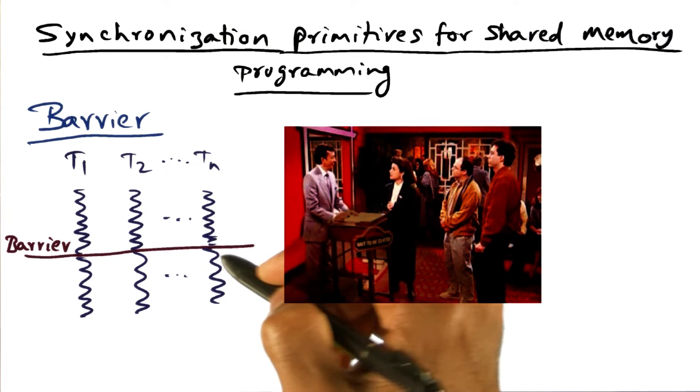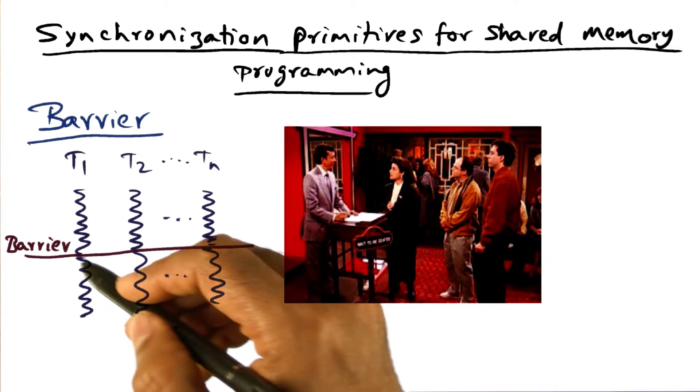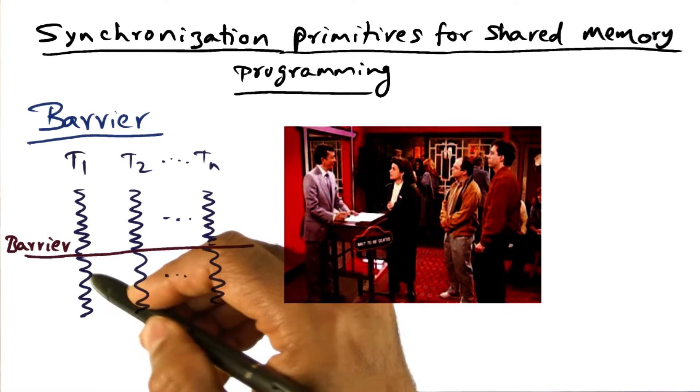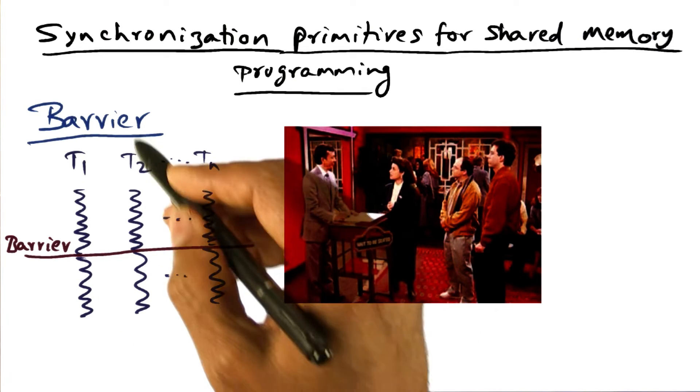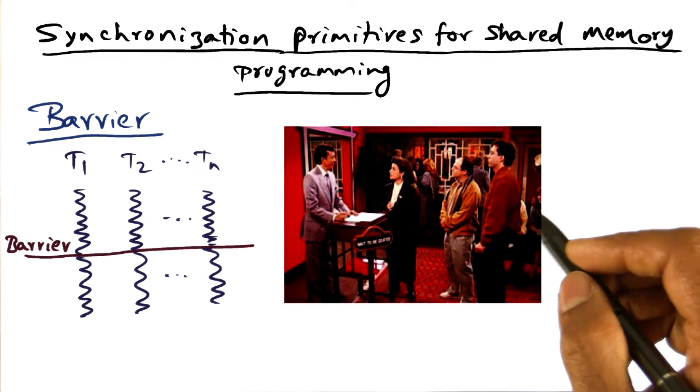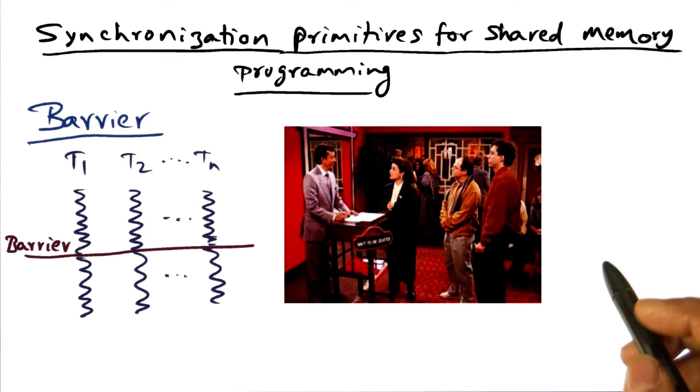And those shirkers are going to eventually show up, but they're not here yet. And until everybody shows up, nobody can advance to the next phase of the computation. So that's the idea behind barrier synchronization, exactly similar to this analogy that I mentioned.